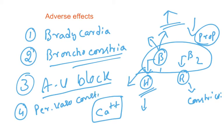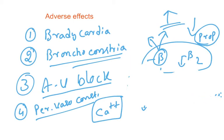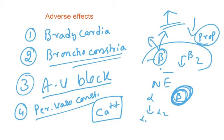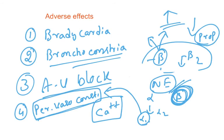Peripheral vasoconstriction occurs with beta blockers because when noradrenaline is released, it normally acts on both alpha and beta receptors. When you block the beta receptors, all the released noradrenaline acts exclusively on alpha 1 receptors on blood vessels, causing vasoconstriction. So in summary, peripheral vasoconstriction occurs because beta-blocked noradrenaline shifts entirely to alpha receptor activity. In the next class we will see about calcium channel blockers.